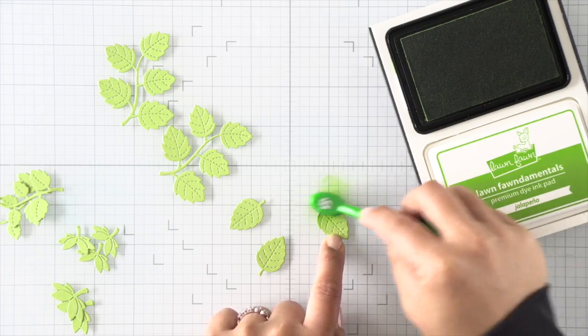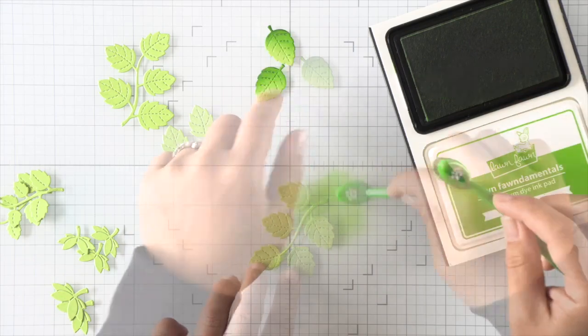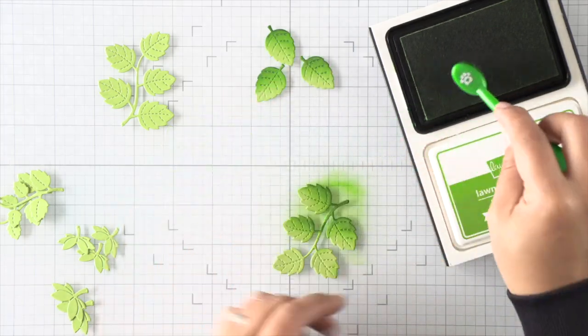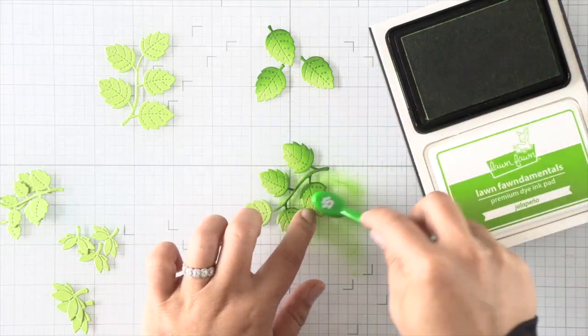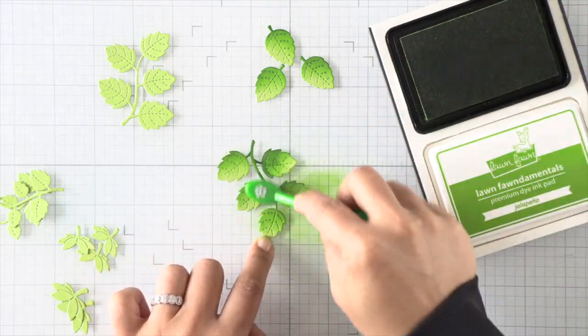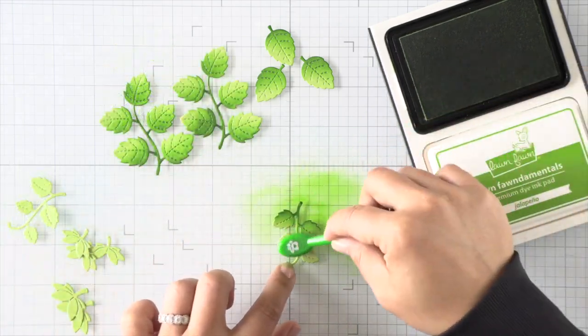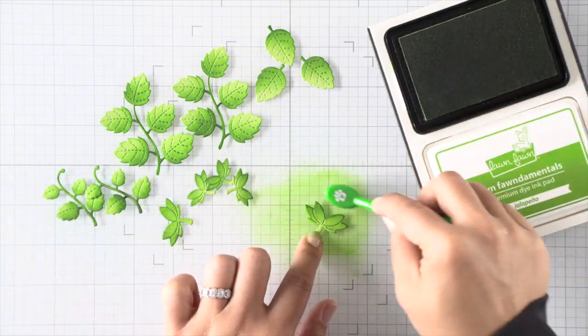Now that this box is created, I can go ahead and set that aside and work on the strawberry elements so that we can piece it all together. I've gone ahead and die-cut everything off-camera, so I have a bunch of foliage and strawberries that we're gonna be ink blending and adding some details to. I'm using some jalapeño ink, and I've used cilantro cardstock.